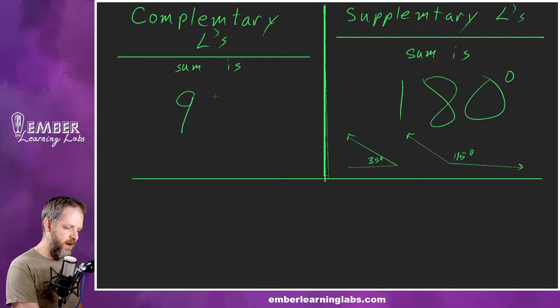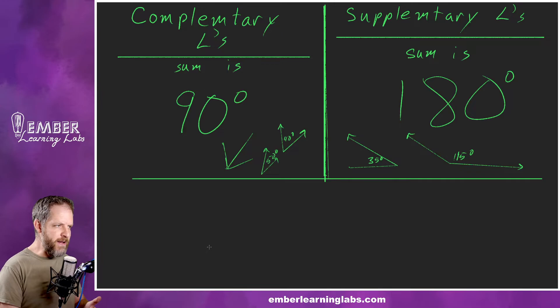Again, they don't have to be right next to each other. We could have an angle like this, which we could say is 40 degrees, and then we could have another angle. This one could be 50 degrees. So they don't have to be stuck together; they don't have to be like this, which is not a linear pair. It's like a complementary pair.